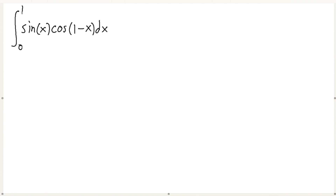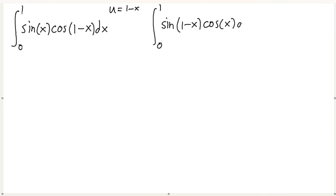We're going to use a trig identity in a way you probably wouldn't expect. If we let u equal 1 minus x, the bounds don't change, and now we have sine of (1 minus x) times cosine of x. We can interchange u and x — at this level we can just interchange variables. So now we have this second form of the integral, and they both equal i.